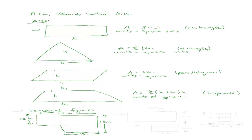I can break this shape into a top rectangle and a bottom rectangle, figure out their separate areas, and add them together. The top rectangle is 24 meters by 12 meters. The bottom rectangle is 18 meters wide. The full height was 18 meters, but 12 meters is already accounted for, so what's left is 6 meters. The second rectangle is 18 by 6. The total area is 24 × 12 plus 18 × 6, which gives 396 square meters.